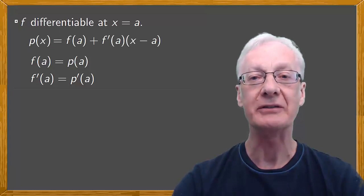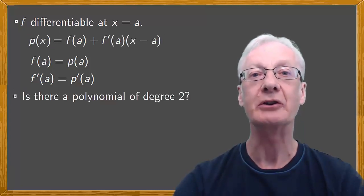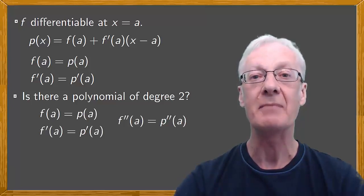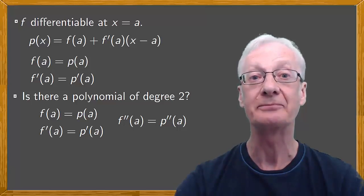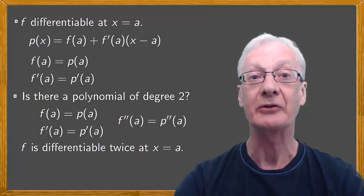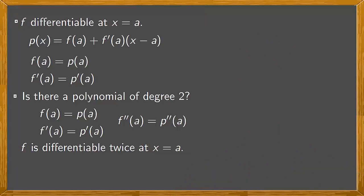What if we now consider the second derivative? Is there a polynomial of degree two whose image and first and second derivatives at x equals a match the corresponding ones of f at a? Of course, we're assuming that f is differentiable twice at x equals a. And yes, you can apply these conditions and easily see that this polynomial is unique. And the expression for it is p(x) equals f(a) plus f'(a) times x minus a plus f''(a), the second derivative at a, over two times x minus a squared.